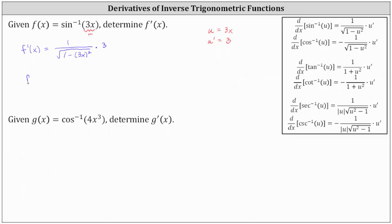Simplifying, we have f prime of x equals 3 divided by the square root of the quantity one minus the square of 3x, which is one minus 9x squared.